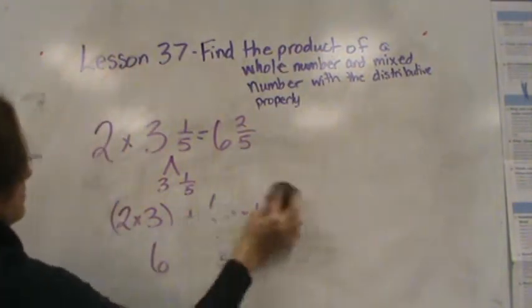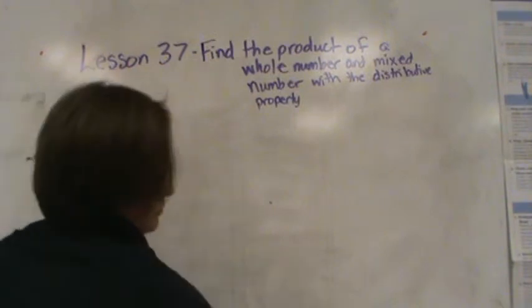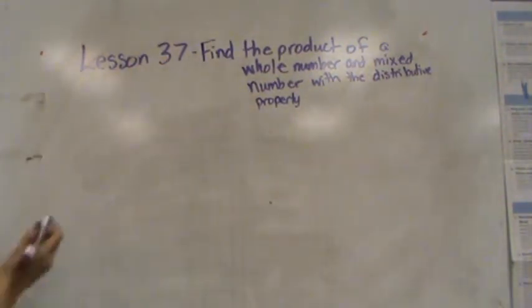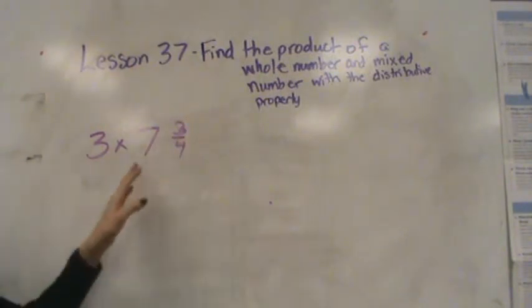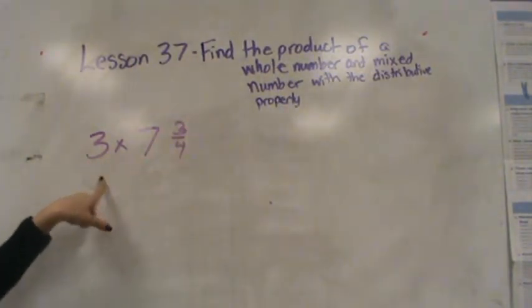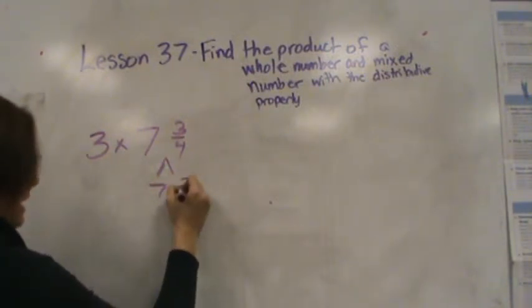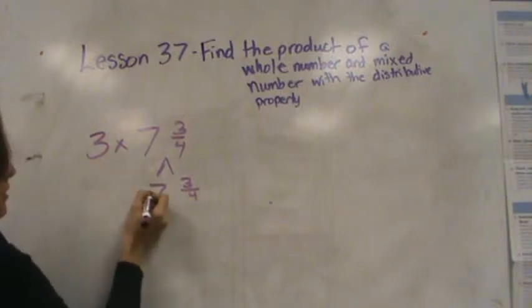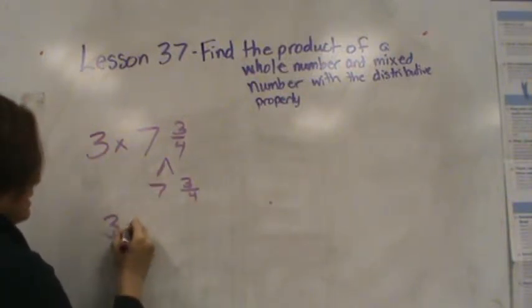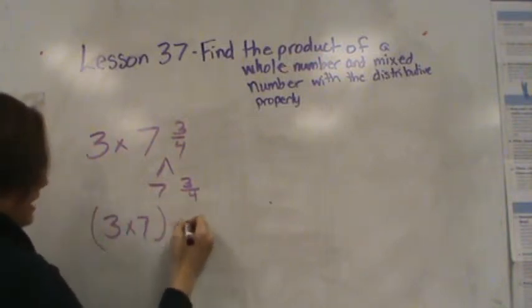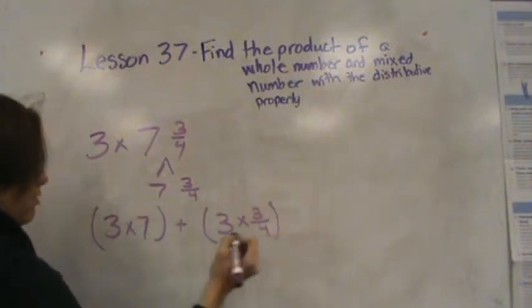Let's try another one. I have here 3 times 7 and 3 fourths. We're going to break up this mixed number and then multiply by the other number. So 7 and 3 fourths breaks up to 7 and 3 fourths. So I'm going to multiply 3 times both of those numbers. 3 times 7 plus 3 times 3 fourths.